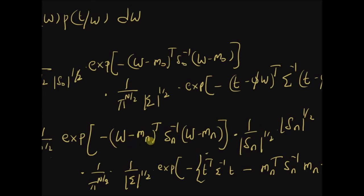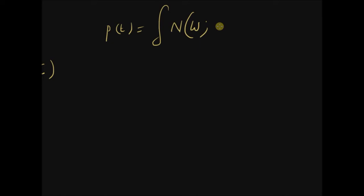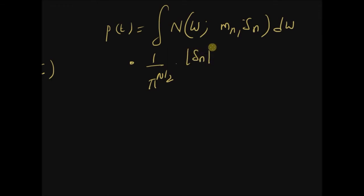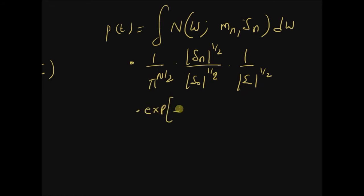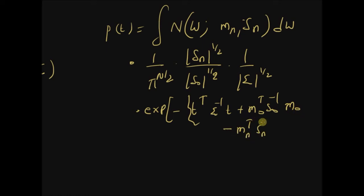After completing the square, we have (1/π^(m/2)) times exp(−(w − m_n)ᵀ S_n⁻¹ (w − m_n)) times (1/|S_n|^(1/2)), multiplied by (1/π^(n/2) |σ|^(1/2)) times exp(−tᵀ σ⁻¹ t − m_nᵀ S_n⁻¹ m_n + m₀ᵀ S₀⁻¹ m₀) dw. All terms outside the Gaussian in w are independent of w.